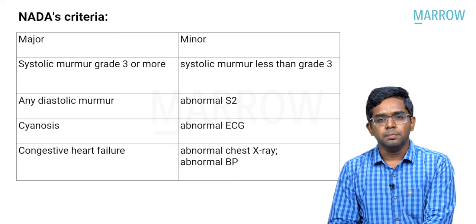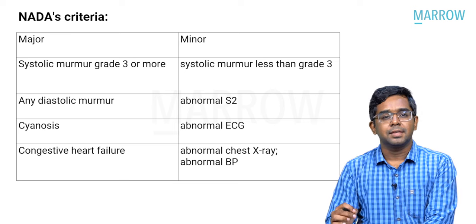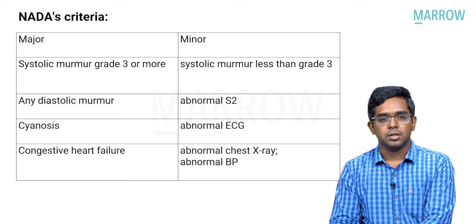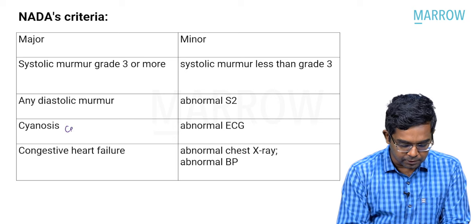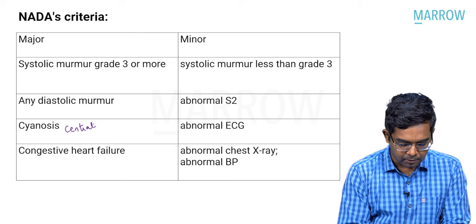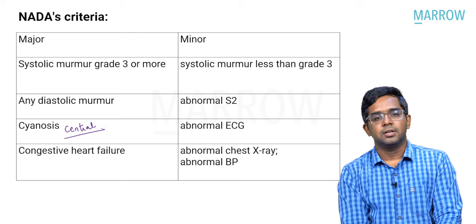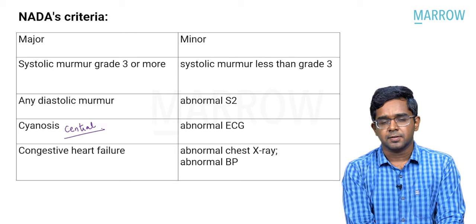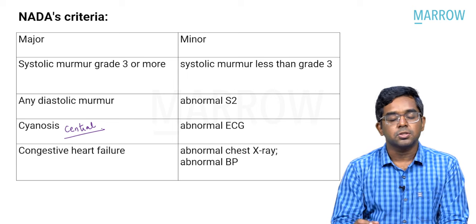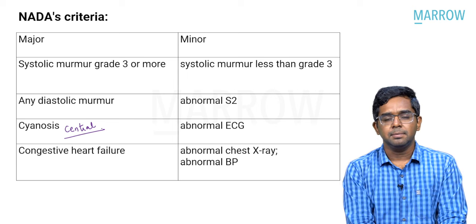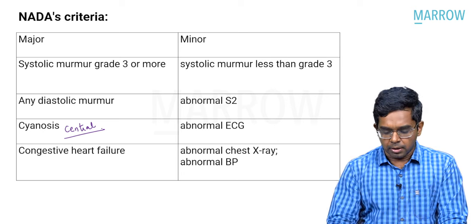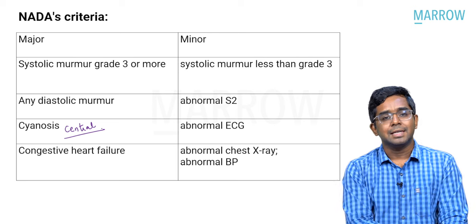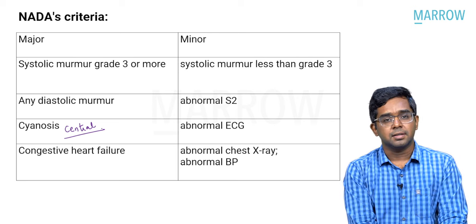Major criteria include systolic murmur grade 3 or more, any diastolic murmur, presence of central cyanosis, and features of congestive heart failure. Minor criteria include systolic murmur of less than grade 3, abnormal heart sounds — that is abnormal second heart sound — abnormal blood pressure, abnormal X-ray, or abnormal ECG. All these are minor criteria.